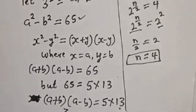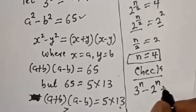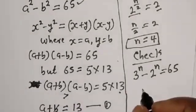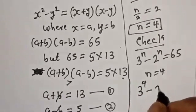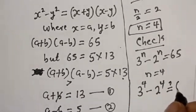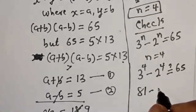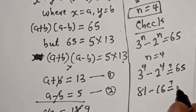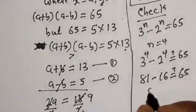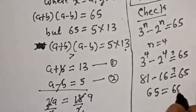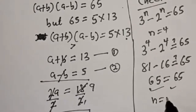Let's check to confirm if our answer is right. Substituting n equals 4: 3 raised to power 4 minus 2 raised to power 4 equals 81 minus 16, which equals 65. This satisfies the given equation, confirming n equals 4.